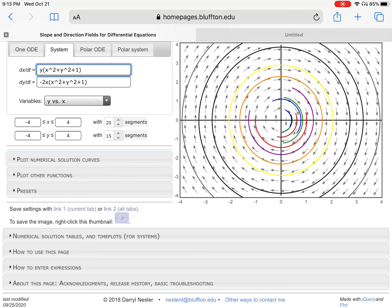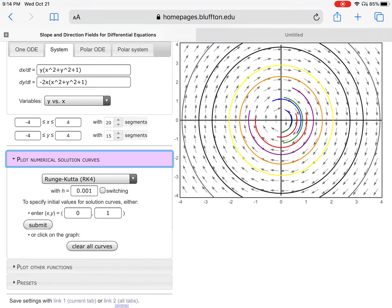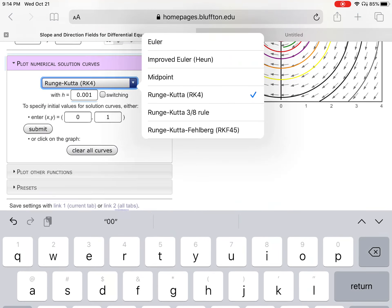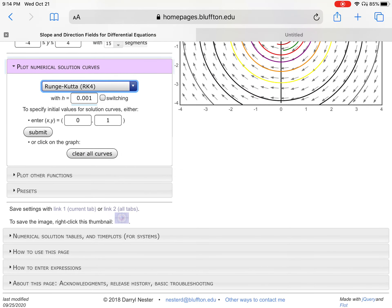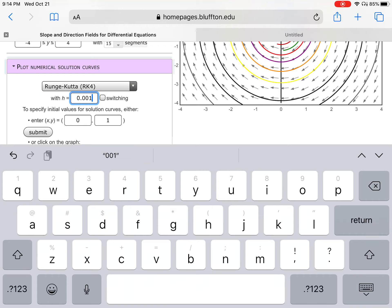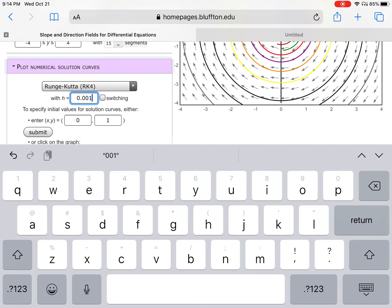But anyway, so this is again another cautionary tale to not believe too much of what you see from this applet. Instead, to do the math and then use the applet to confirm the math. And if the applet is showing something different, as I did, try playing around with the settings, certainly the type of solver that you're using, and this which controls how coarse or how fine the solver is doing its job of numerically solving the system.